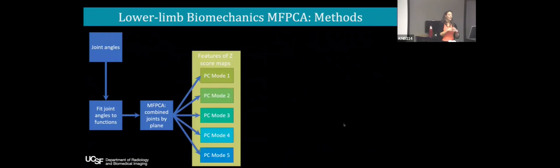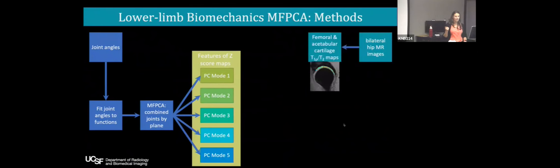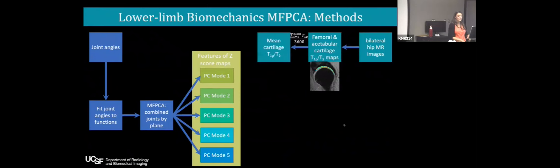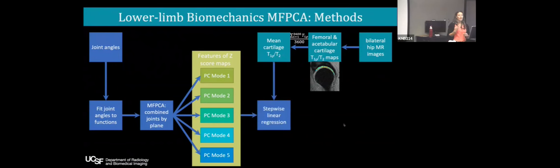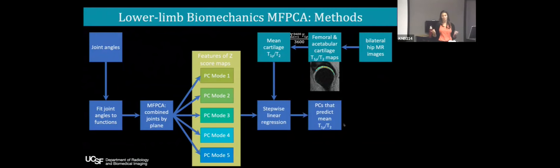This gave us five PC modes per plane. We also acquired bilateral hip MR images to calculate T1-Rho and T2 maps, then averaged over the cartilage — averaging over 3,600 voxels — to get mean femoral cartilage T1-Rho and T2 and mean acetabular cartilage T1-Rho and T2. We then used stepwise linear regression to determine which PCs were predictive of our mean T1-Rho and T2 values.